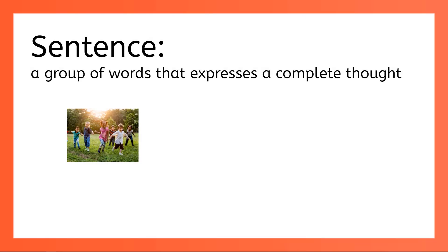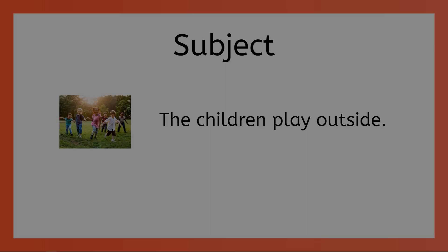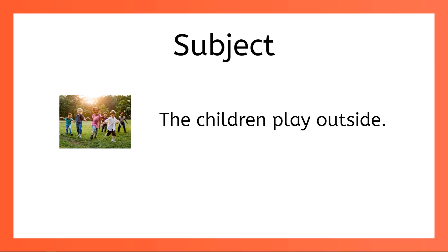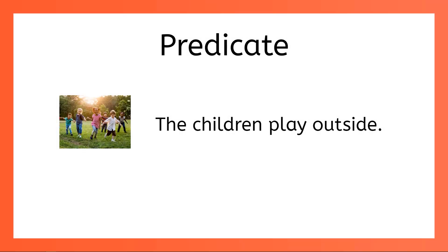You've already learned that a sentence is a group of words that is put together to express a complete thought, like the children play outside. You also know that a sentence is made up of two main parts, a subject and a predicate. The subject is the part that tells who or what the sentence is about. The sentence is about the children. We call the rest of the sentence the predicate. The predicate tells us something about the subject.